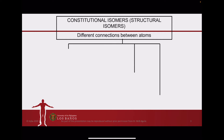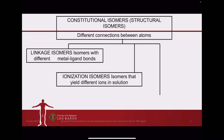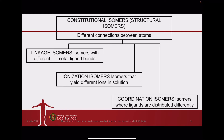Under constitutional isomerism, sometimes referred to as structural isomerism, we have different types. The first one would be the linkage isomer, the second would be the ionization isomer, and the last one would be the coordination isomer. Linkage isomerism is brought upon by having different metal-ligand bonds, whereas ionization isomers are those that give rise to different ions when dissolved in solution. Coordination isomers are those wherein the ligands are distributed differently.